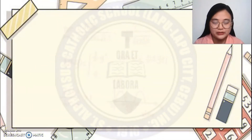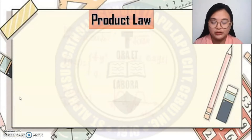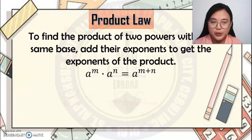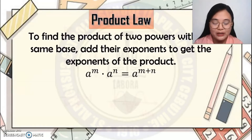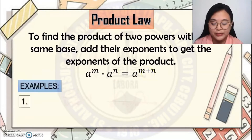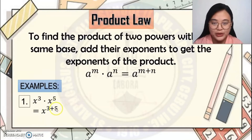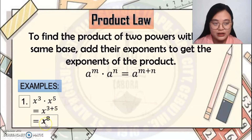Laws of Exponents: First Law — Product Law. To find the product of two powers with the same base, add their exponents to get the exponent of the product. Given a raised to m times a raised to n, you just add their exponents: a raised to m plus n. For example, x cubed times x raised to 5 — you add the exponents: 3 plus 5 equals 8, so the answer is x to the 8th.